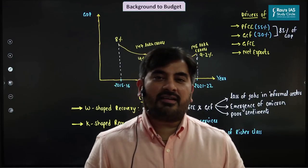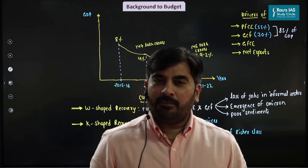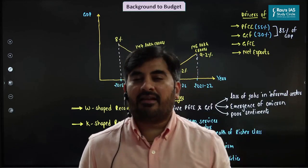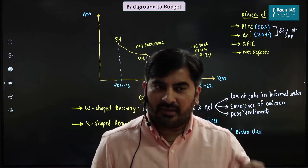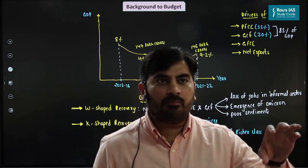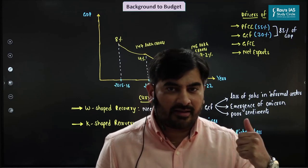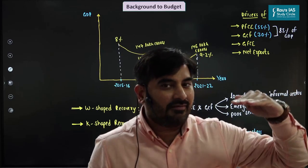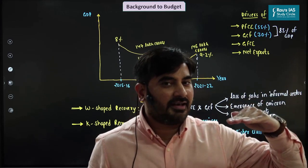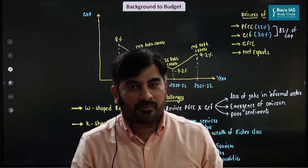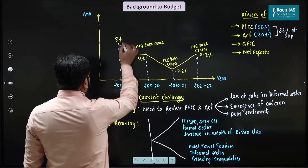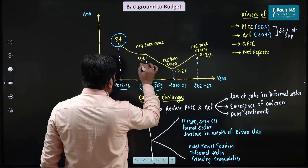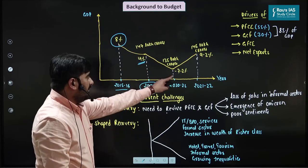The Indian economy was facing a slowdown even before the COVID-19 pandemic, starting from 2016-17. Banks had accumulated non-performing assets, faced the twin balance sheet problem, and were unable to give loans freely. This caused a decline in investment rates and GDP growth rate. In 2015-16, GDP growth was 8%, but it decelerated to 4% in 2019-20. So even before COVID, there was a slowdown.